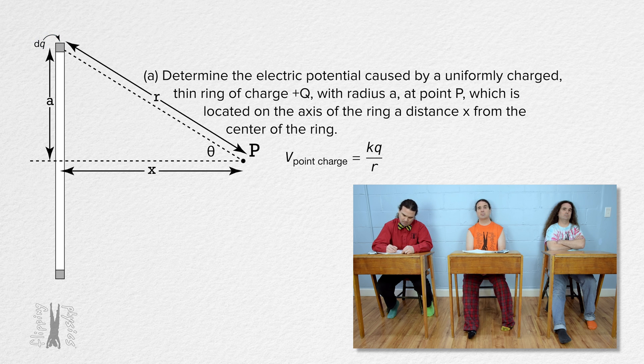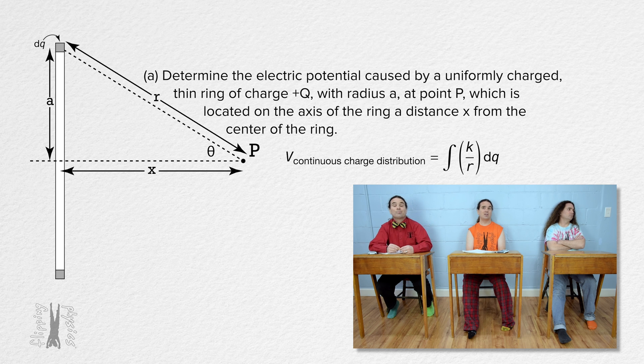That means the electric potential caused by a continuous charge distribution equals the integral of the Coulomb constant over r with respect to charge. The Coulomb constant and r are constant for every charge dq, therefore they can come out from under the integral. The integral of dq is just q,